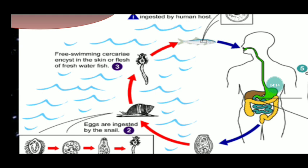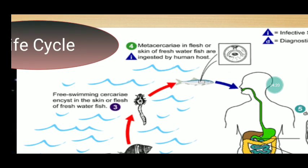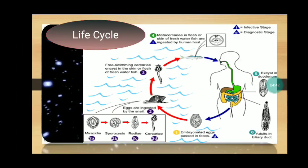The cercaria locates a cyprinoid fish and attaches to the fins or skin, then becomes a metacercaria. Fish-eating mammals like dogs, cats, and humans become infected by ingesting undercooked fish containing metacercariae. After ingestion, the parasite ascends to the ampulla of Vater into the biliary duct, where they attach and develop into adults, which lay eggs after three to four weeks.